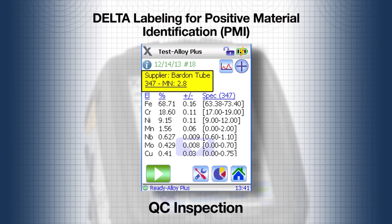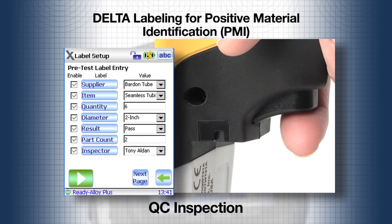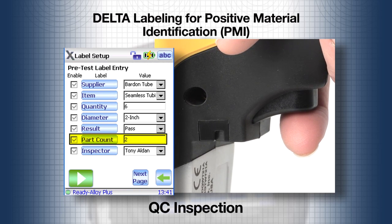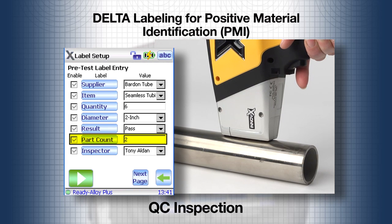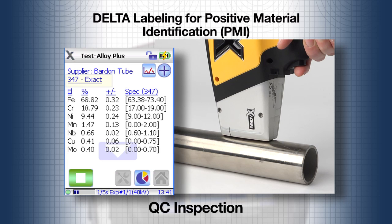The result also shows the supplier field from the label window. The Delta chooses the first label as the default, but you can change which label appears on each test. When the trigger is pulled to start the next test, the label window comes up and the part count increments to show that the second part is about to be tested. Pull the trigger and the test commences — the second tube is also the expected 347 grade.